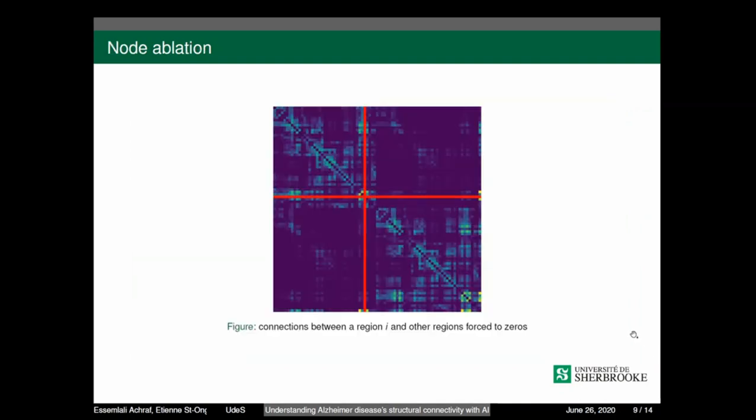As we can see in the further slides, there is node ablation. We force to zero the connection between region I and all the other regions. Meanwhile, node randomization, we change this and randomize the values between the connections of region I and other regions, and edge ablation by forcing to zero connections between a set and combination of specific number of regions.